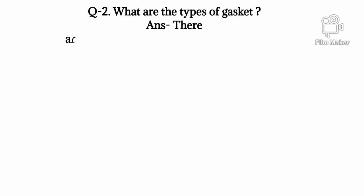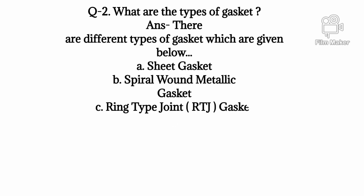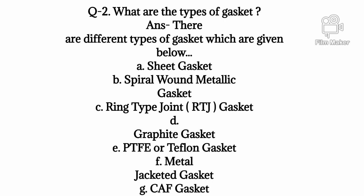Q2: What are the types of gasket? Answer: There are different types of gasket which are given below. A: Sheet Gasket, B: Spiral wound metallic gasket, C: Ring type joint RTJ Gasket, D: Graphite Gasket, E: PTFE or Teflon Gasket, F: Metal Jacketed Gasket, G: Kammprofile Gasket.